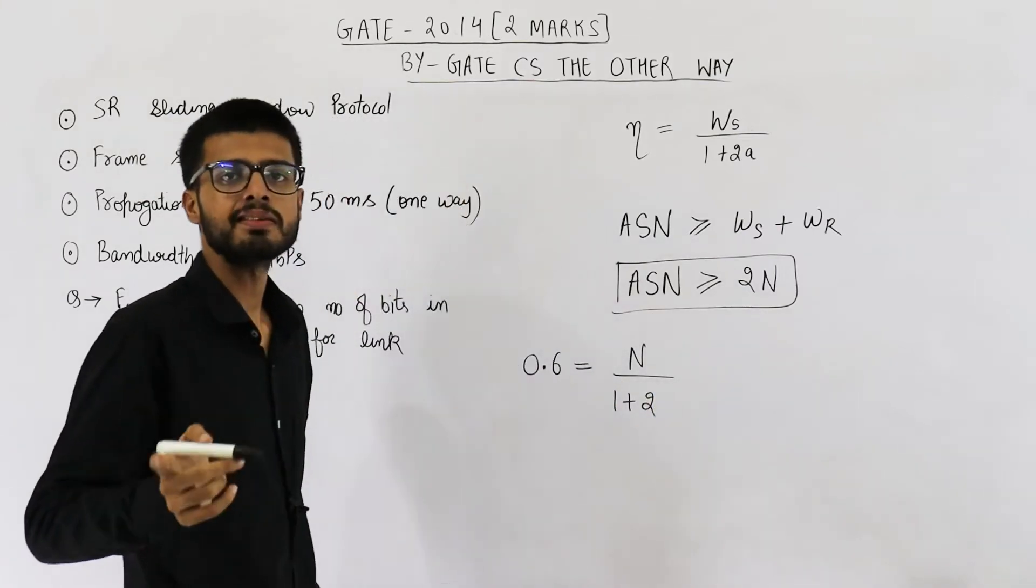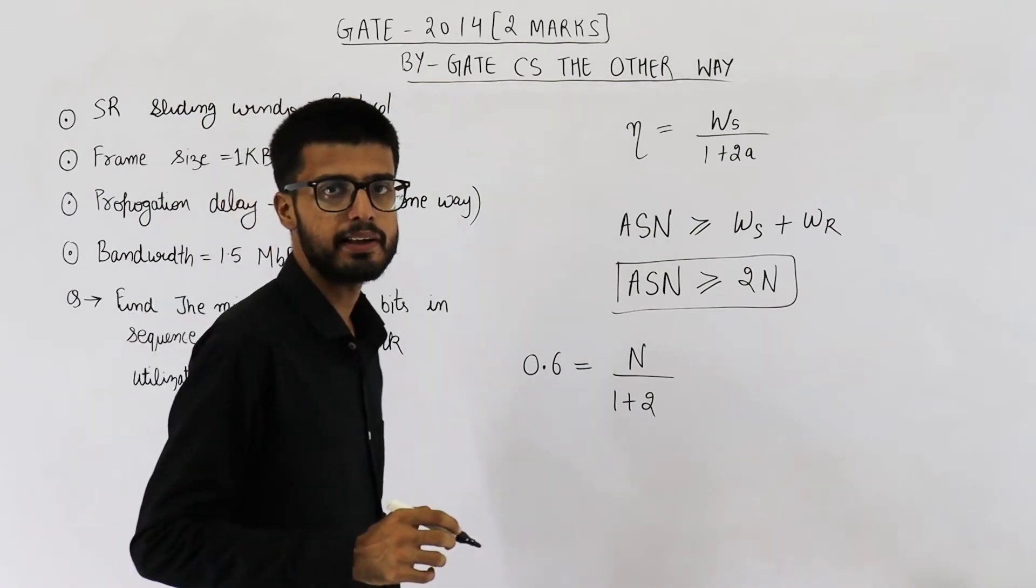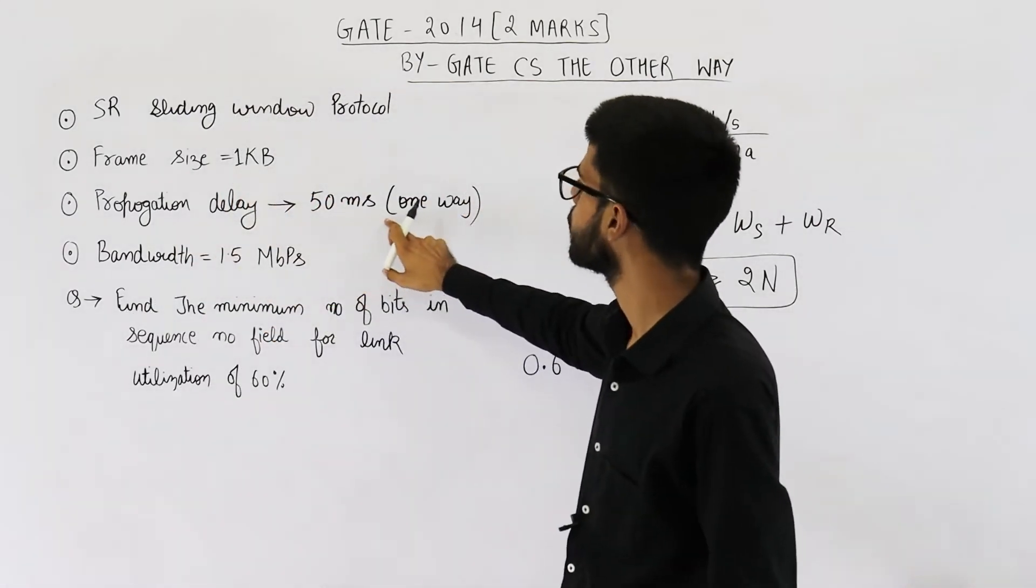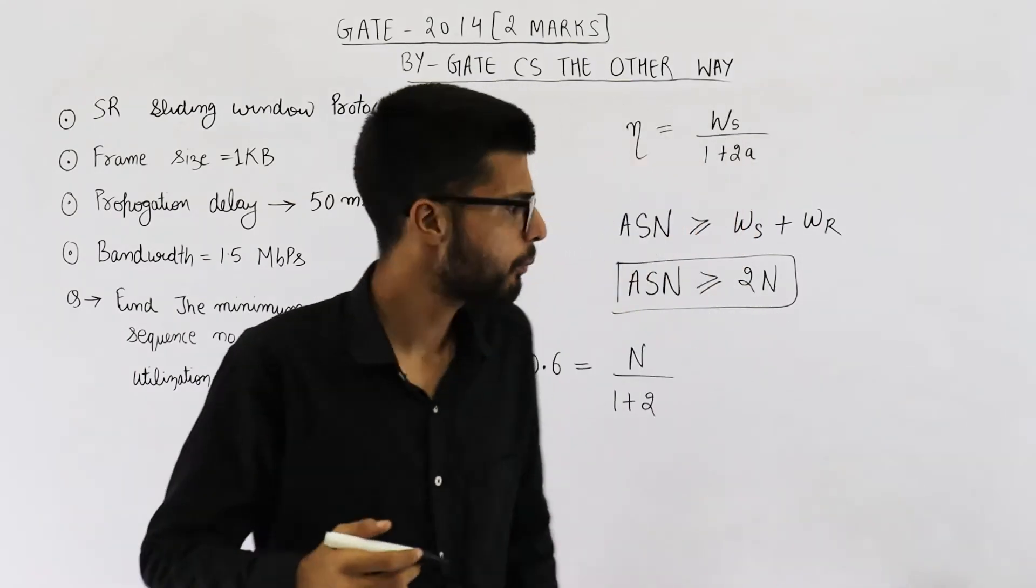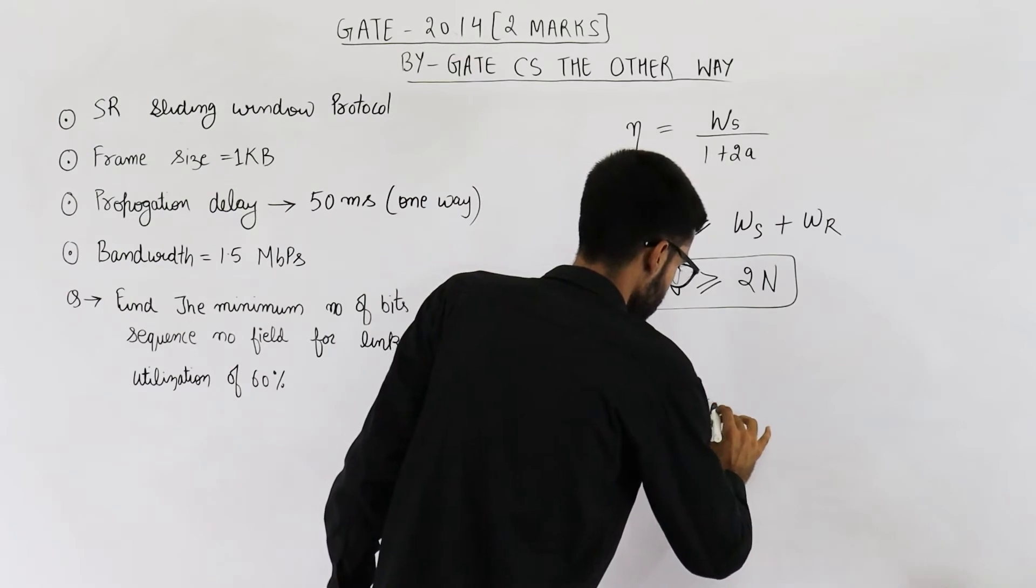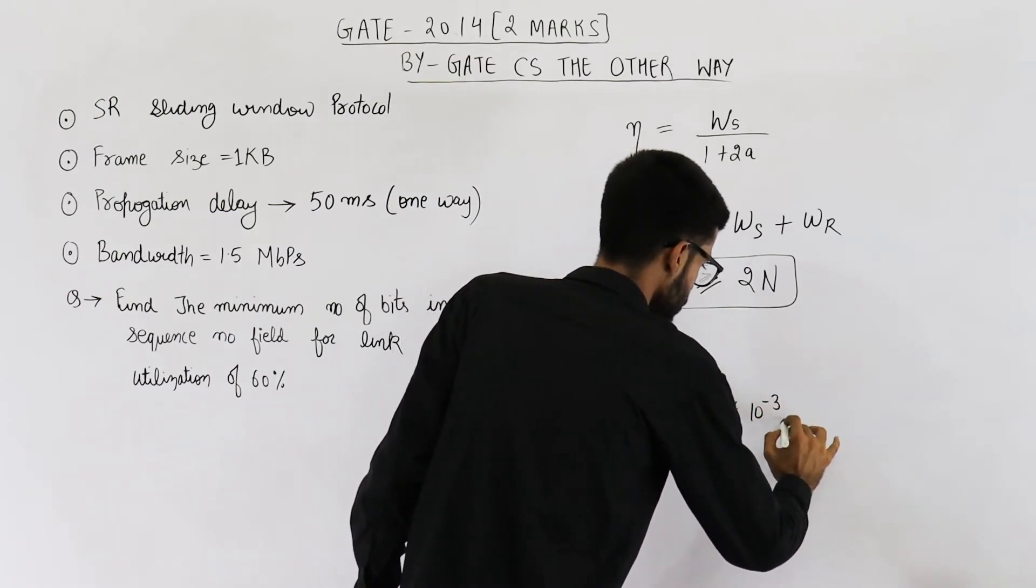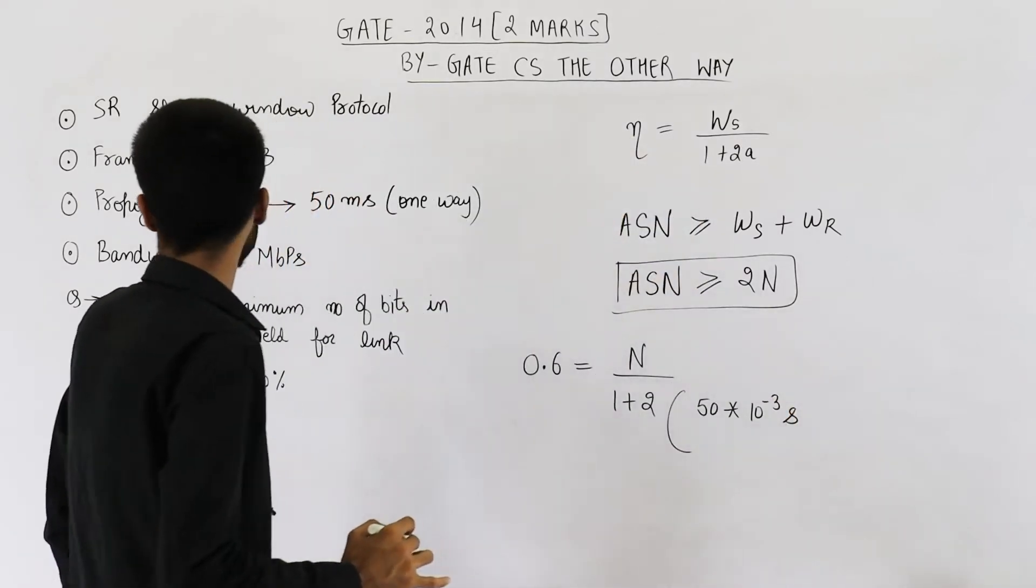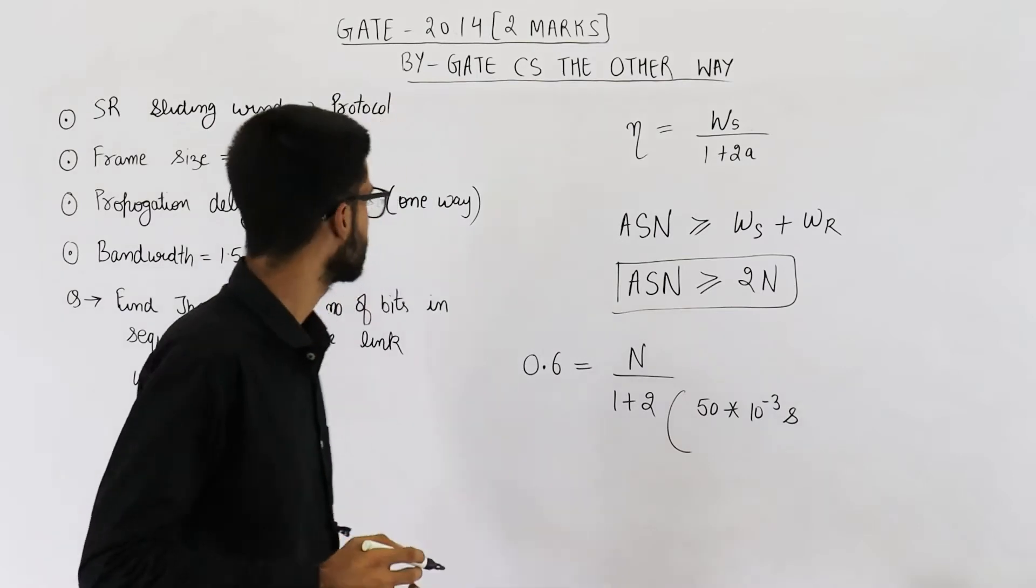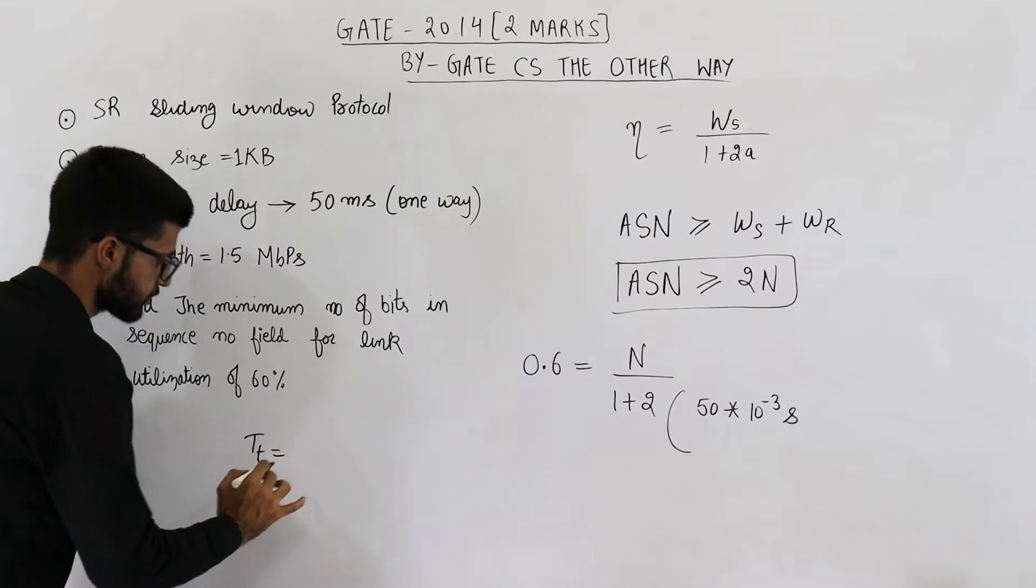Value of a is tp divided by tt, the propagation delay divided by transmission delay. So propagation delay is 50 milliseconds. And this is one way delay. Anyways, in formula also we require one way delay only. So this is 50 milliseconds. Propagation delay divided by the transmission delay. Now transmission delay is not directly given. Let us find transmission delay first.